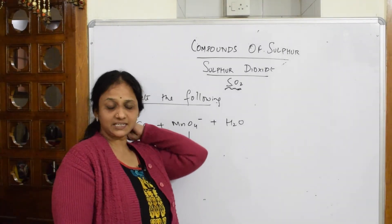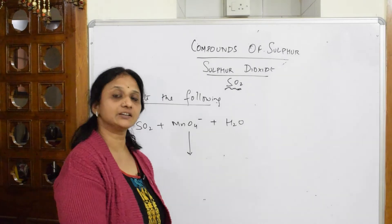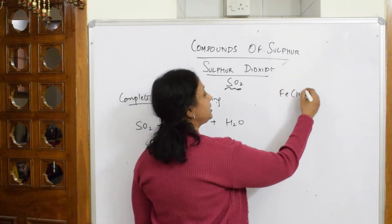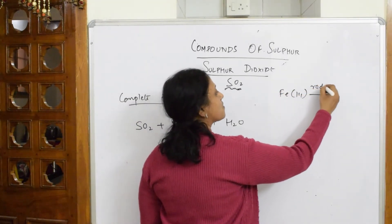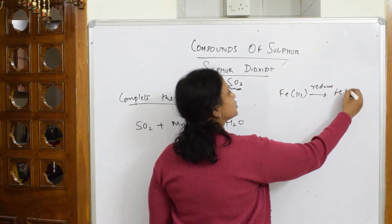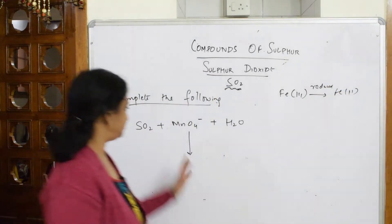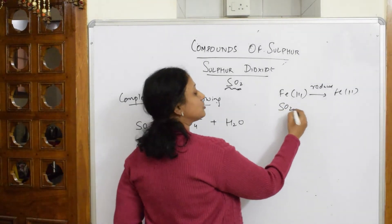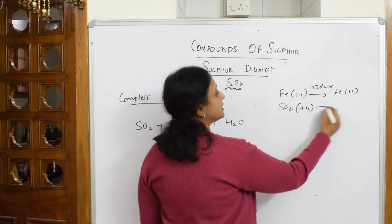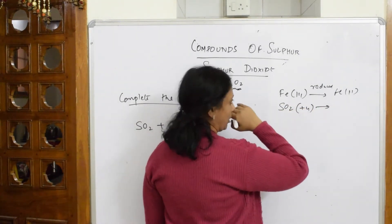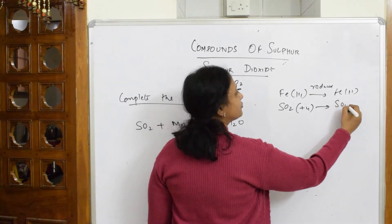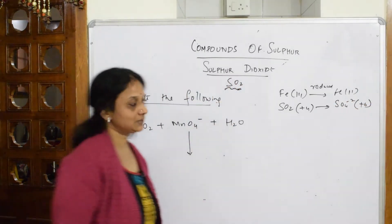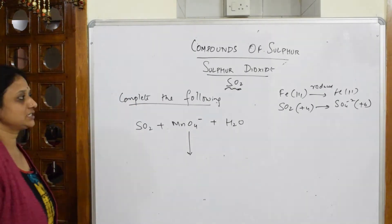Let's recap the same concept we studied with iron: Fe³⁺ gets reduced to Fe²⁺, and sulfur dioxide gets oxidized — from the plus four oxidation state it converts to SO₄²⁻ where the oxidation state of sulfur is plus six.